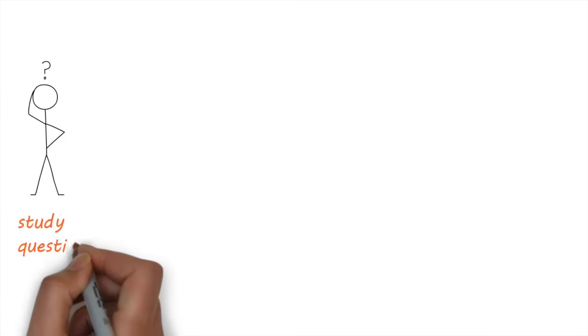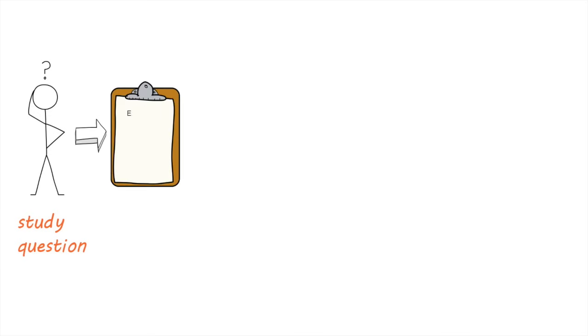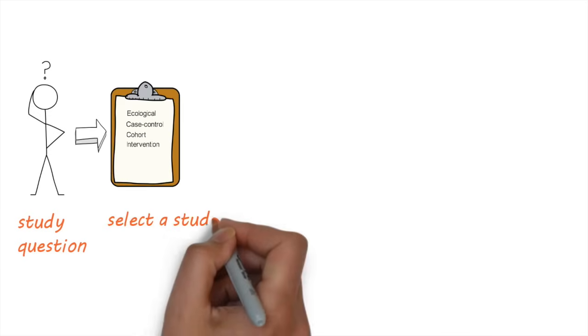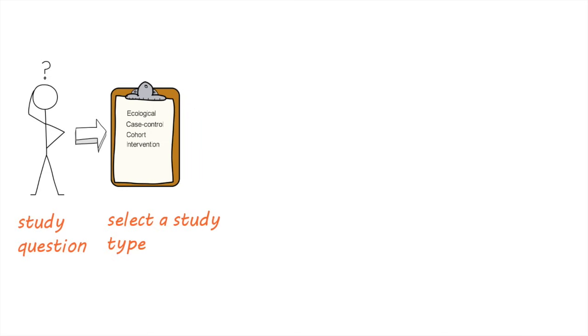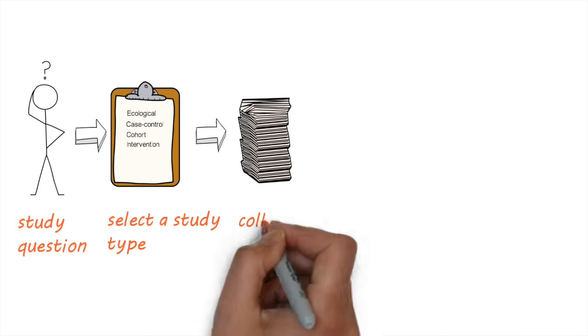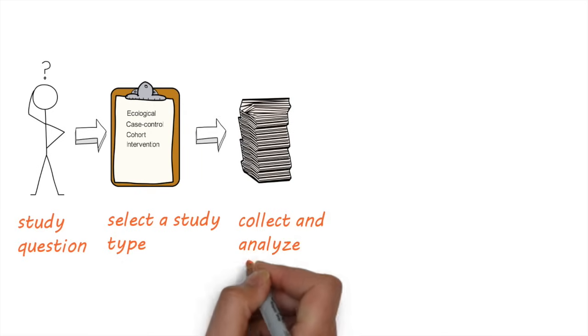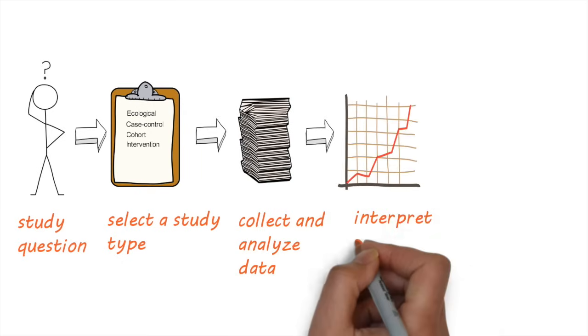So the first thing to do in any study is to have a study question. What are we trying to find out? Then we need to figure out what the best type of study is that would help us answer the question. Once we've decided on a study type, we need to do the study, collect and analyze the data using a suitable statistical method. Then we need to interpret the results to make sense of it all.